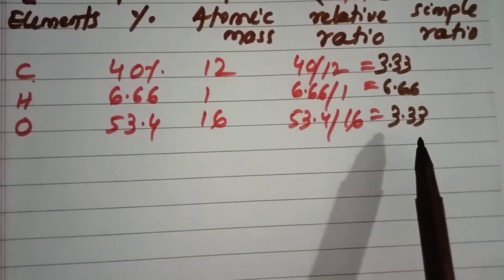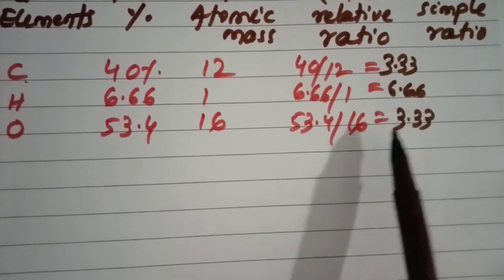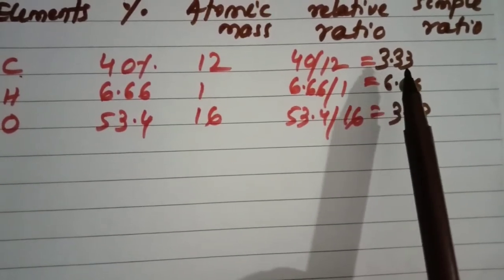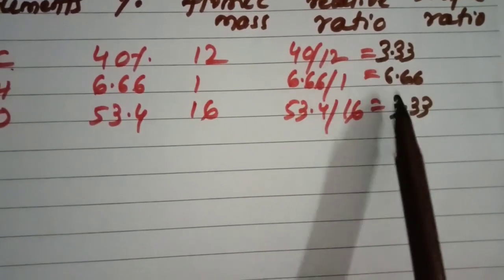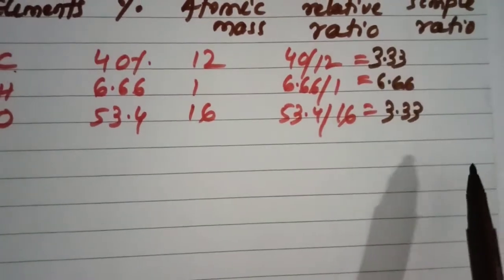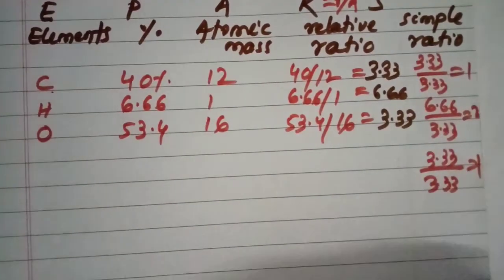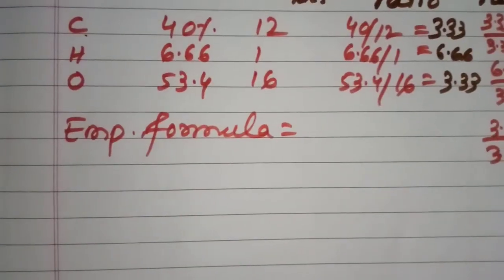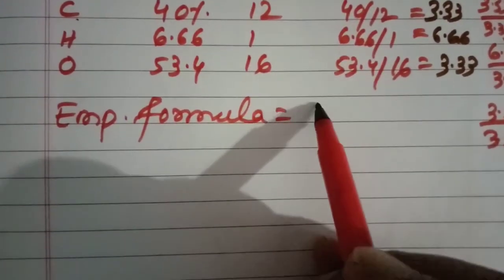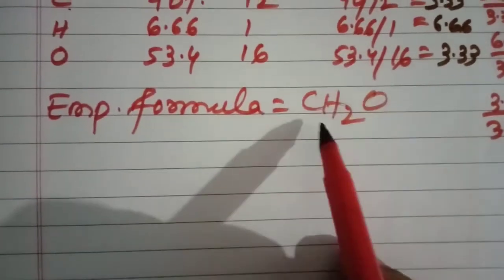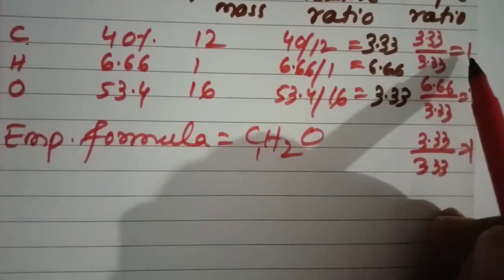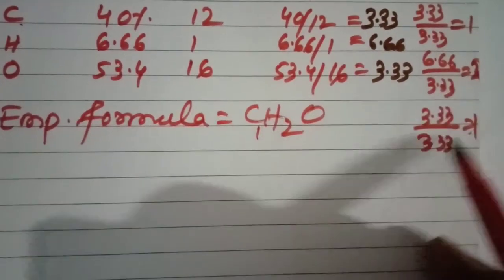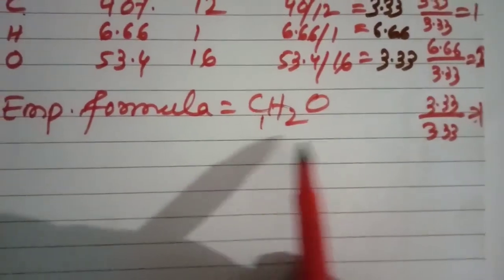The ratios are: 3.33, 6.66, and 3.33. Out of these three, 3.33 is the smallest. So divide each relative ratio by 3.33 to get the simple ratio. You get 1, 2, 1. So the empirical formula is CH2O — the 1 for carbon, 2 for hydrogen, and 1 for oxygen.